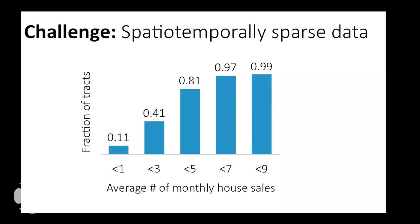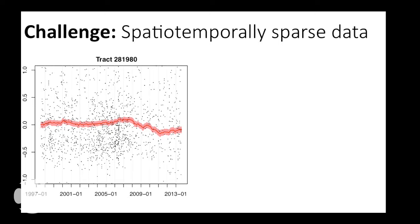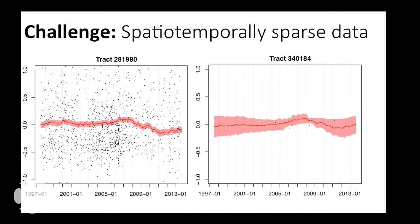A challenge here is that the data are spatio-temporally really sparse. More than 40 percent of census tracts in Seattle have fewer than three house sales on average per month, and more than 10 percent have fewer than one. For one example census tract, there were only four house sales over a 17-year period — that makes estimating value in that tract, especially over time, really difficult. So the question is: how can we tackle this problem?